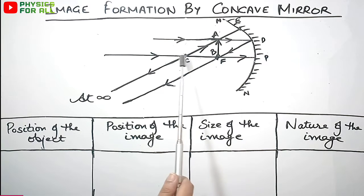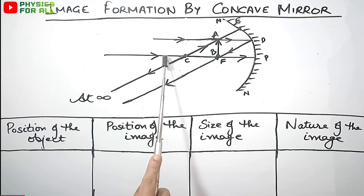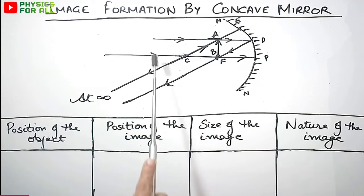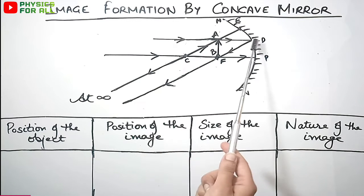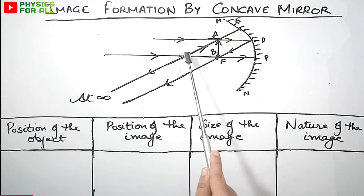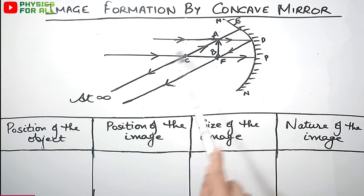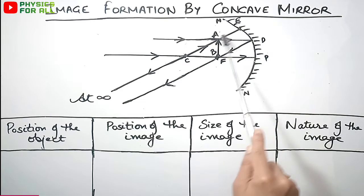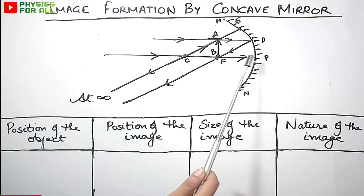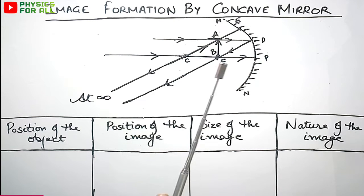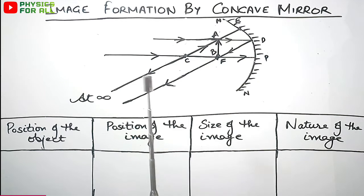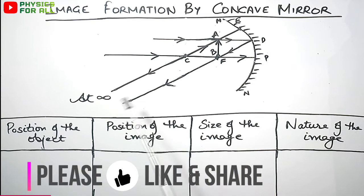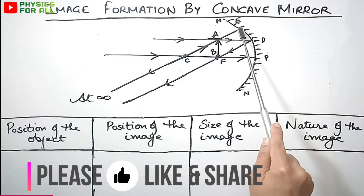In all previous cases — object beyond C, at C, between C and F, and now at F — we consider one ray coming parallel to the axis going through the principal focus. The second easy ray is the one passing through center of curvature, which after reflection retraces its path.